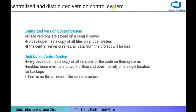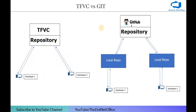Centralized version control means all file versions are stored on the central server. No developer has a copy of all files on their local system. If the central server crashes, all project data will be lost. Distributed version control means every developer has a copy of all versions of the code on their system, enabling team members to work offline. There is no threat even if the server crashes because the source code exists in multiple places.